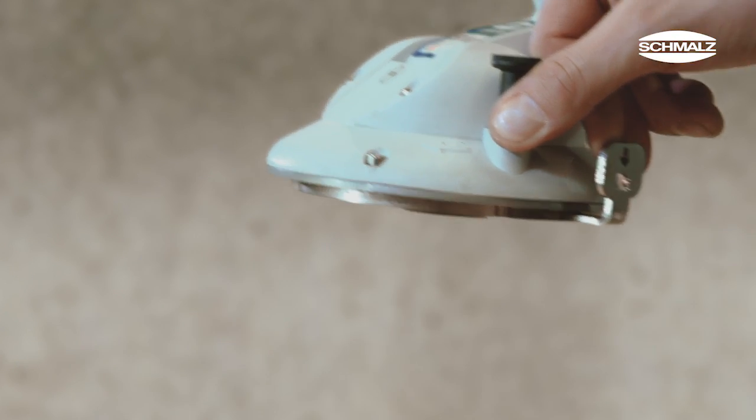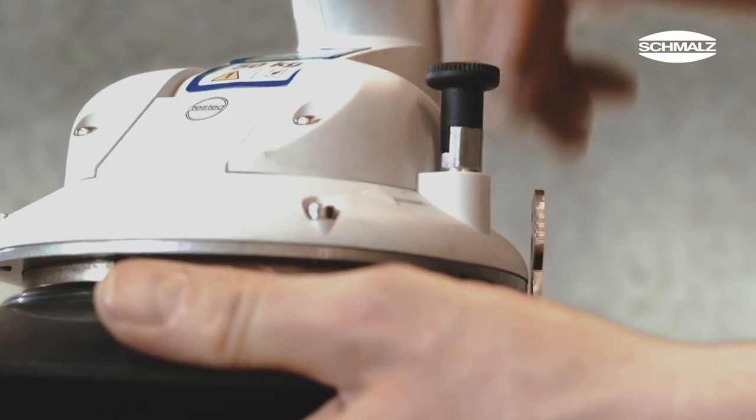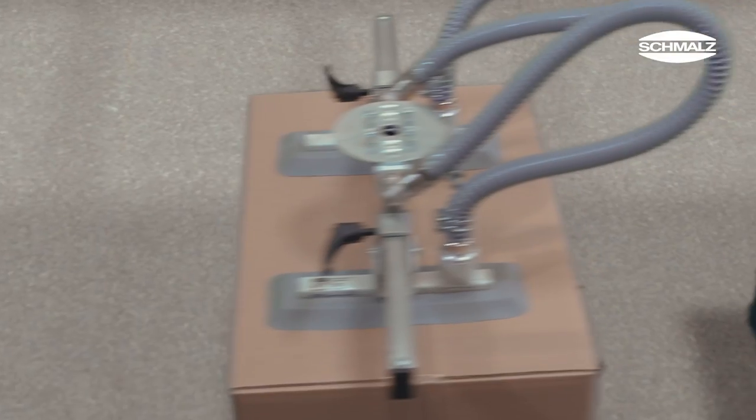The JumboFlex comes with a quick change adapter. This feature enables the vacuum gripper to be changed without tools in just a few steps.